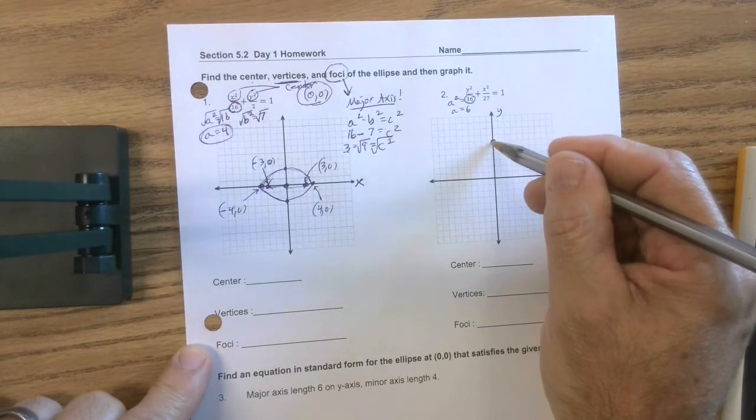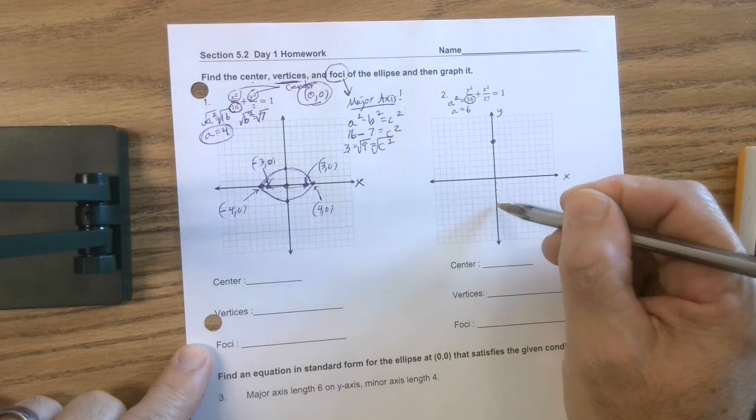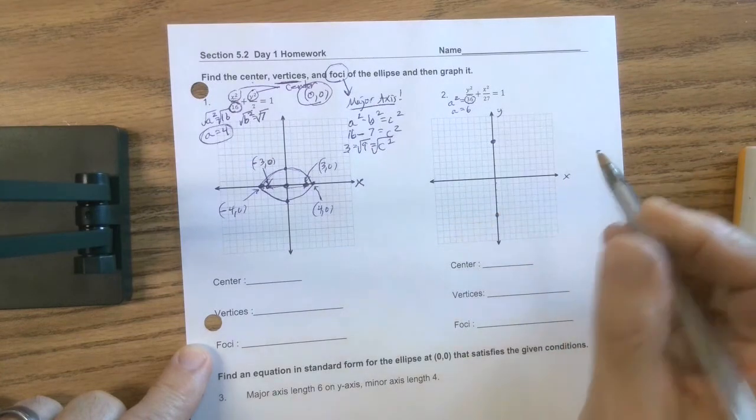1, 2, 3, 4, 5, 6. 1, 2, 3, 4, 5, 6. That's my major axis.